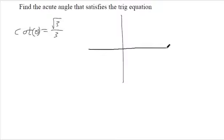We're asked to find an acute angle, so that means it's something between 0 and 90 degrees, that satisfies this condition: the cotangent ratio is square root of 3 over 3.